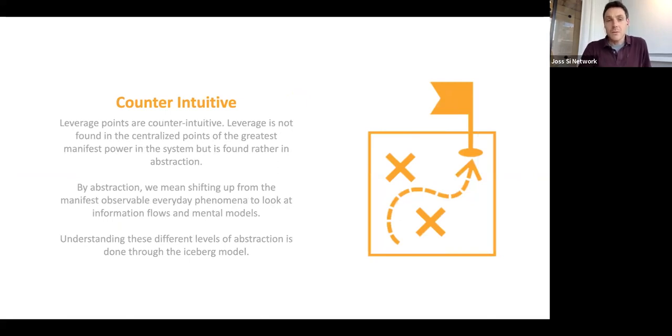One other thing you may know if you know a bit about leverage points already is this idea that they're counterintuitive. They're not found where we would commonly perceive locuses of influence and change within a complex system. Often our thinking is linear in the sense that we look for the places in the system that would have the highest immediate impact when we think about changing systems. So we look at the center, the centralized institutions, the top of hierarchies and political systems in businesses.